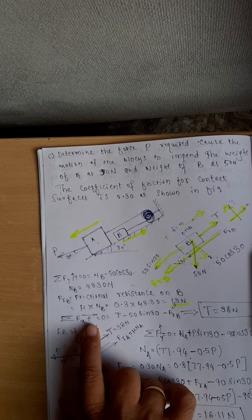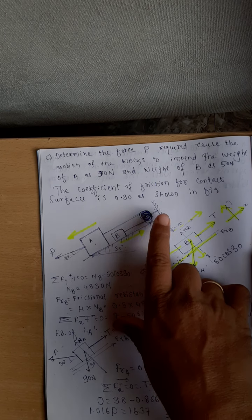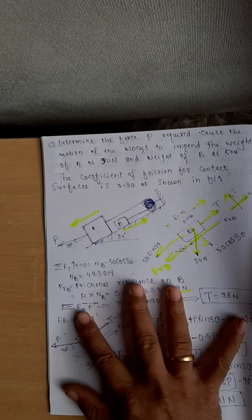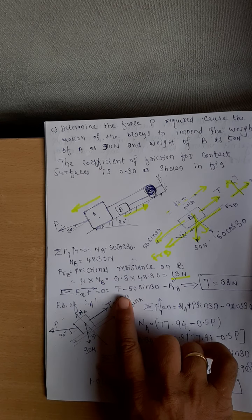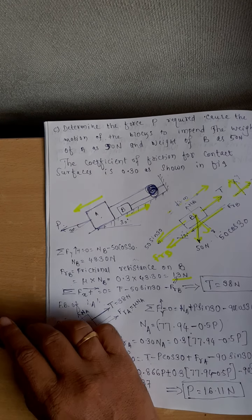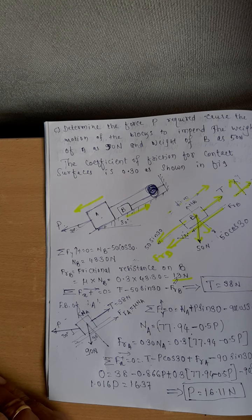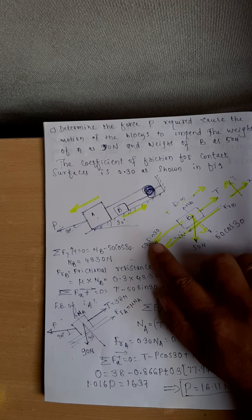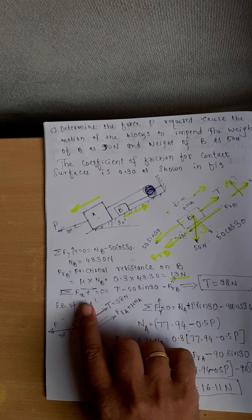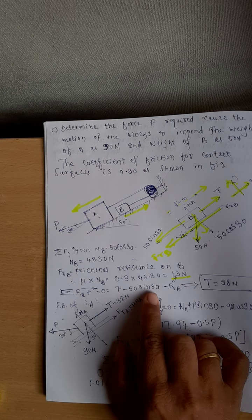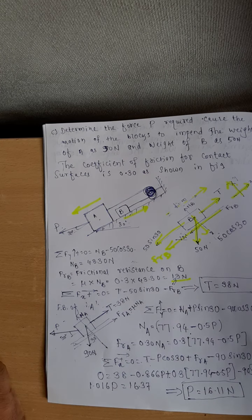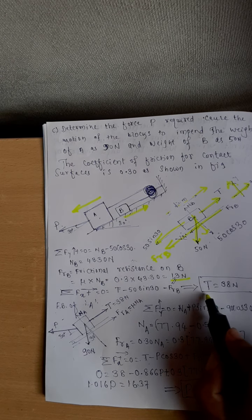Now apply total of forces in x-direction equal to zero. The forces in x-direction are T, 50 sin 30, and FRB. T minus 50 sin 30 minus FRB = 0. FRB is 13 N; substituting gives the tension in the string T = 38 N.